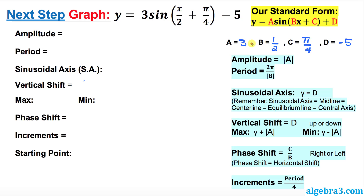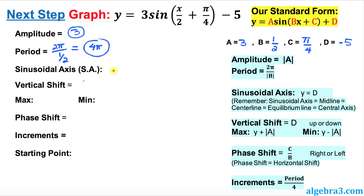Given those values, we're going to figure out amplitude and so on. Look at the formulas on the right-hand side — they're going to help us a lot. The amplitude is simply the absolute value of a, which is 3. The period is always 2 pi over the absolute value of b, which is 1 over 2. Once you simplify that, the period turns out to be 4 pi.